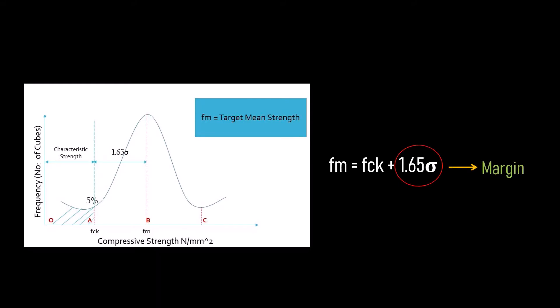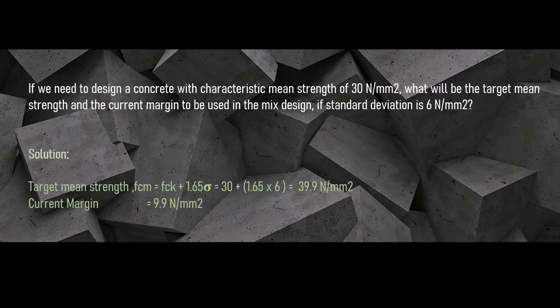If we need to design a concrete with characteristic mean strength of 30 N per mm2, what will be the target mean strength and the current margin to be used in the mix design? If given the standard deviation of 6 N per mm2.